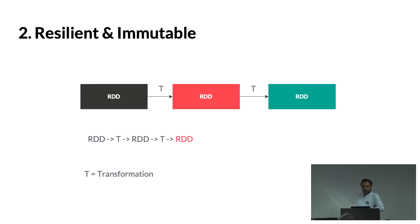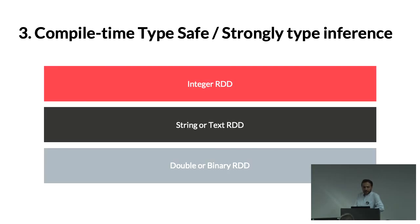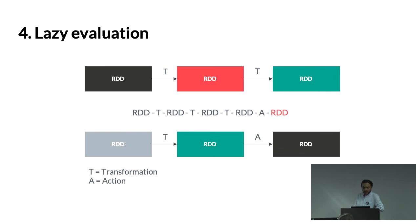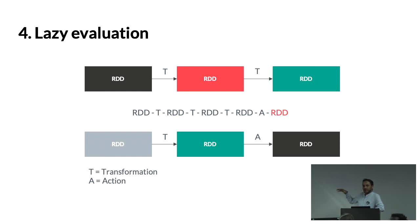RDD is resilient and immutable. If a transformation fails, it has the capability to recover and revert to the original state. Being immutable means you cannot change it. Technically, RDD is compile-time safe on top of the JVM and does strongly-typed type inference. Python's typing system works better with Scala in this regard. RDD does lazy evaluation — you plot the entire transformation graph, reading from a file, filtering, joining, and filtering again — and when you apply an action, it starts executing that graph.